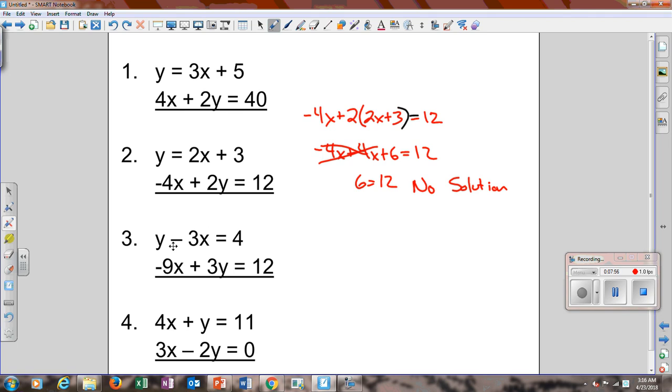Number 3. Going to get y by itself first. There's no number with the y. So it's going to be the easiest to get by itself. So that's why we're going to choose y. So it gives us y equals 3x plus 4. Then we substitute that in here. Negative 9x plus 3 times 3x plus 4. We have to distribute the 3. I'm going to start skipping that step. Negative 9x plus 9x, let's cancel. You get 12 equals 12. So that would be infinite solutions. Pretty easy.